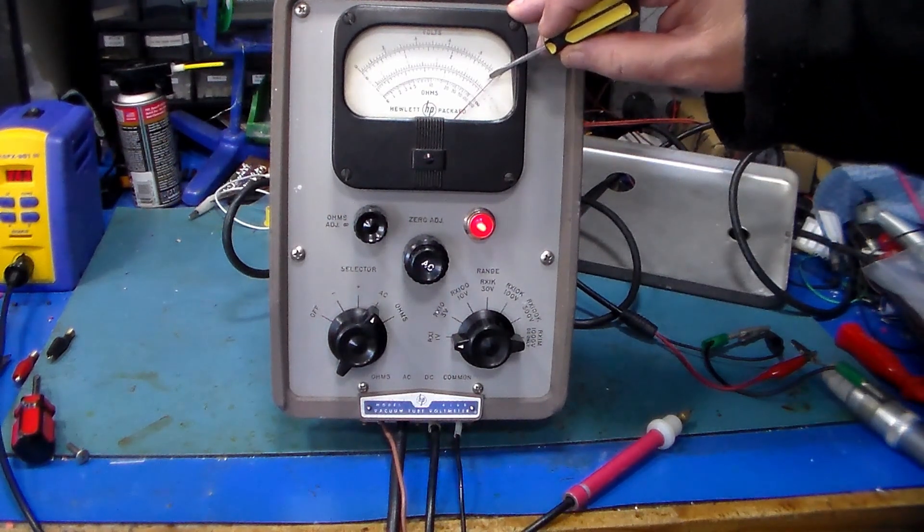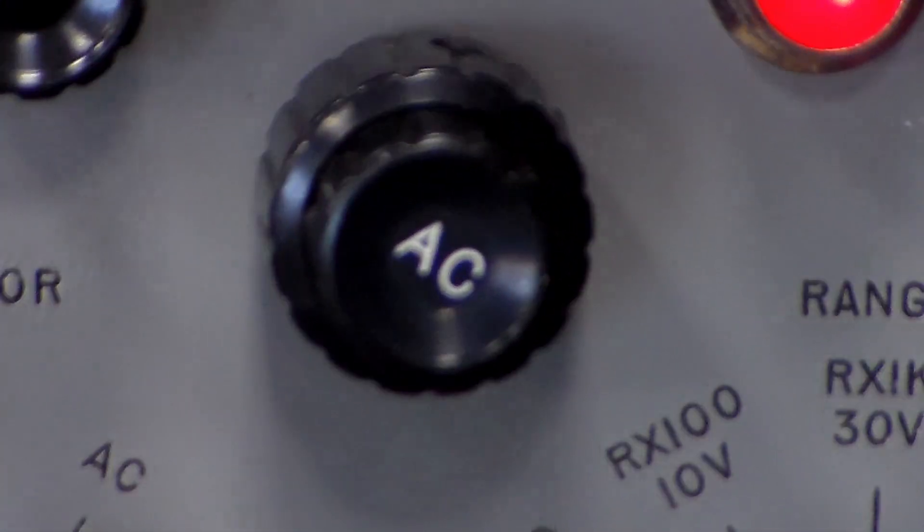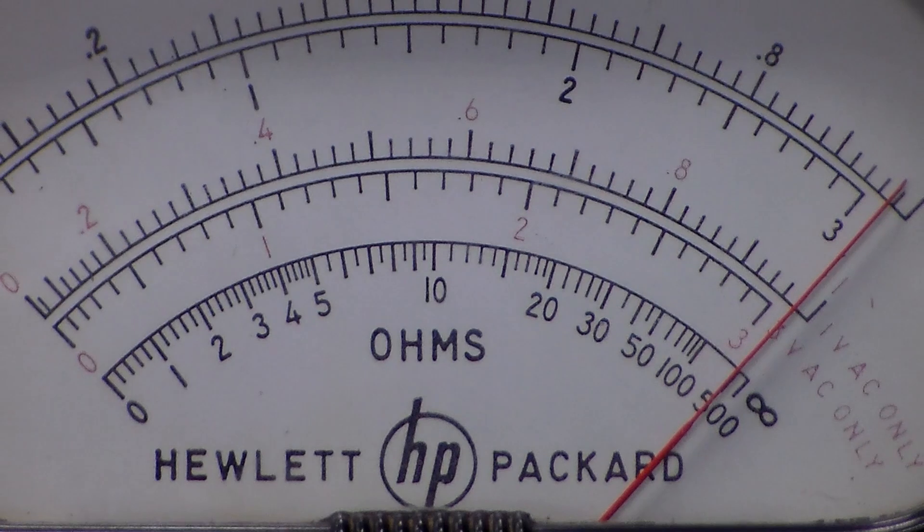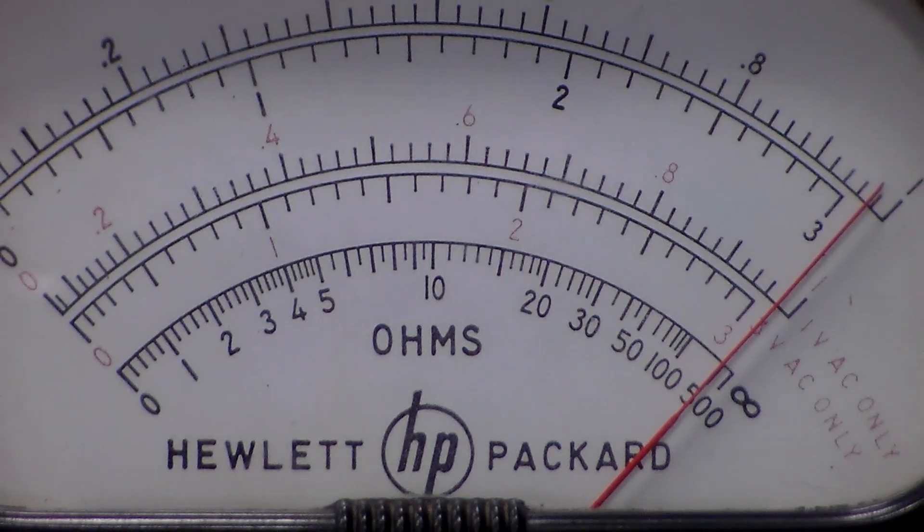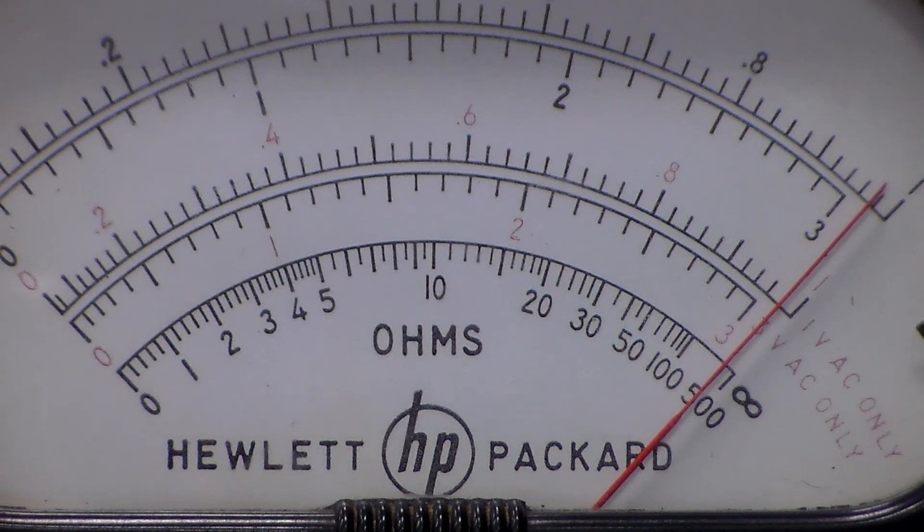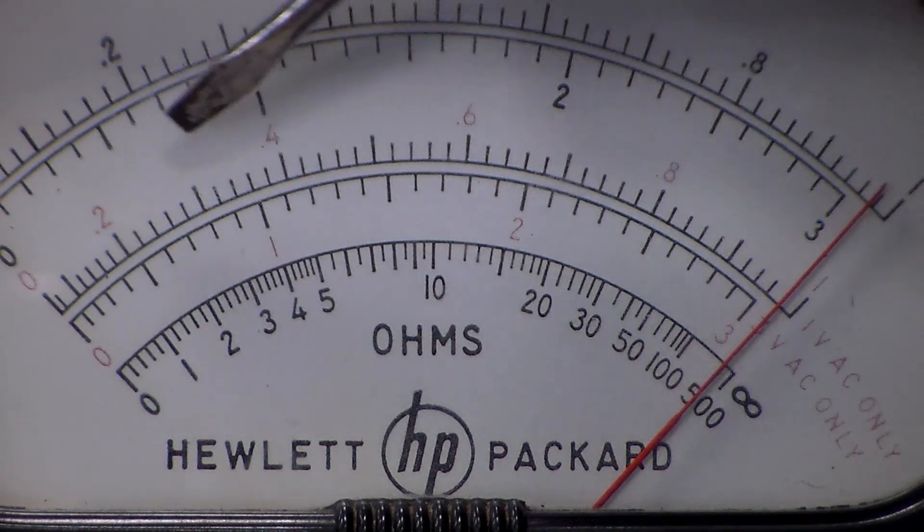I'll just zoom in so that you can see. We're slightly below 1 volt on the red range here. This particular scale has faded and the red looks more like a light fawn color. Because of the nonlinearity in the diode, the low voltage ranges for the AC have a non-linear scale down the bottom end.